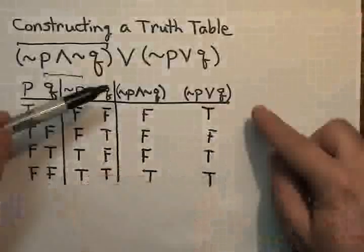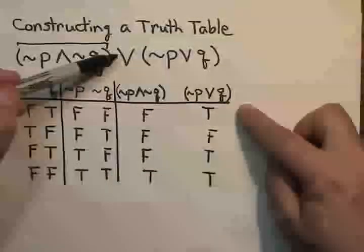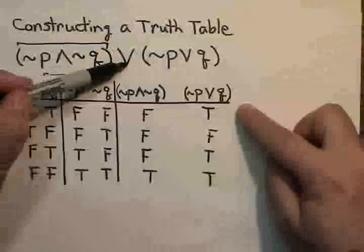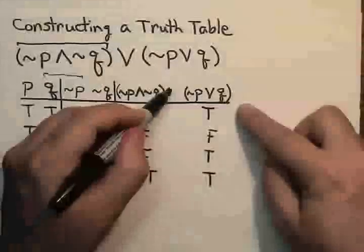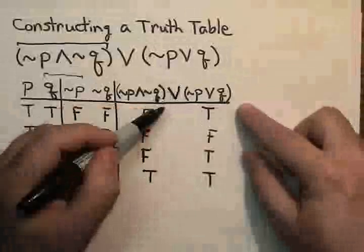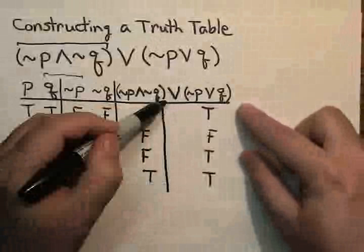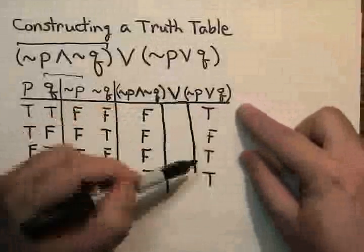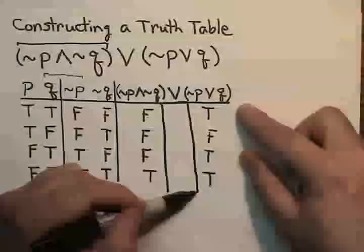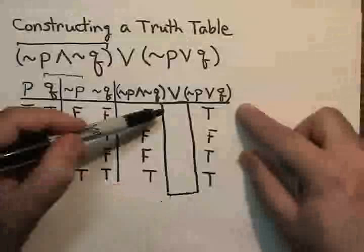Now, I need to say, well, the entire statement I'm trying to build has another disjunction. So I'm taking the disjunction of those two statements. And what I'm going to do, I think, is just sort of box in the area under that disjunction and say that my final result will be here.